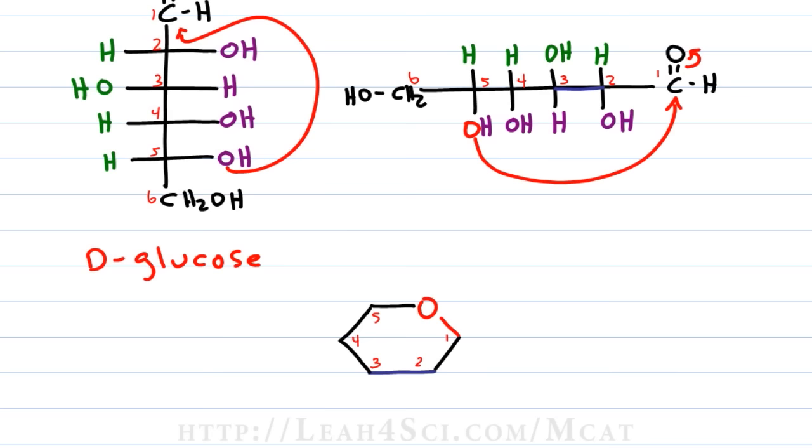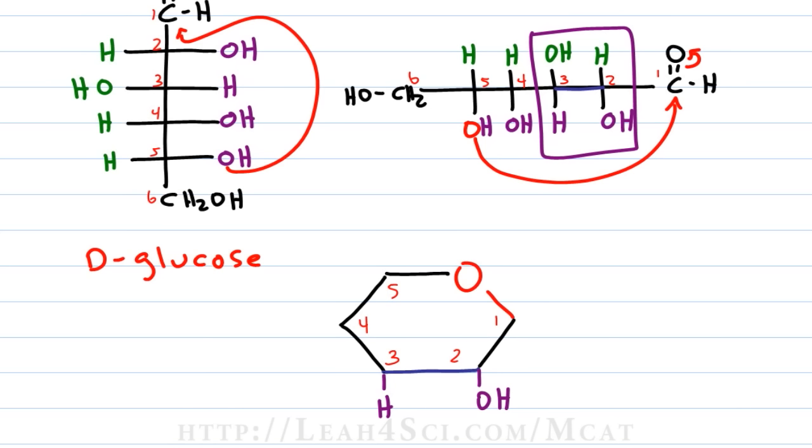Let's make it bigger so we can see where all the substituents go and add them in. For carbons two and three nothing changed. We have an OH down on two, hydrogen down on three, hydrogen up on two and OH up on three.